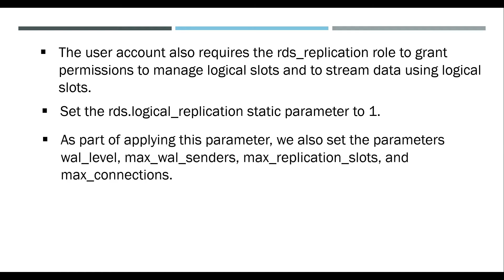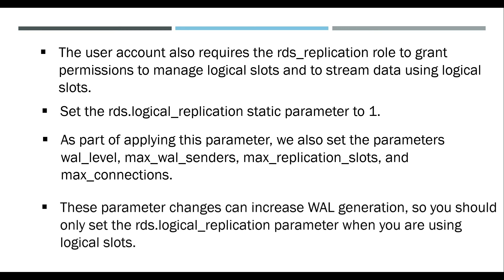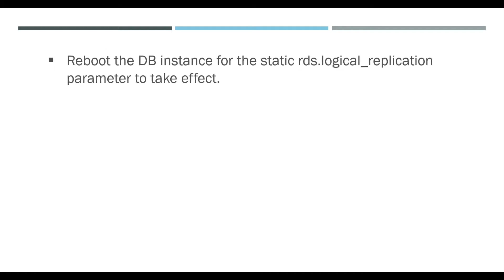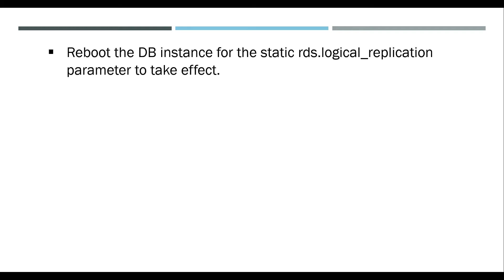As part of applying this parameter, we also set the parameters wal_level, max_wal_senders, max_replication_slots, and max_connections. These parameter changes can increase WAL generation, so you should only set the rds.logical_replication parameter when you are using logical slots. Reboot the DB instance for the static rds.logical_replication parameter to take effect.